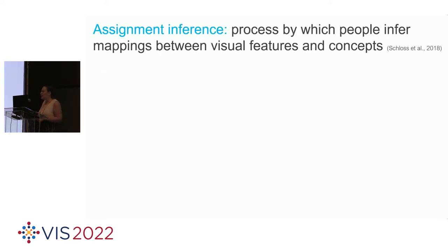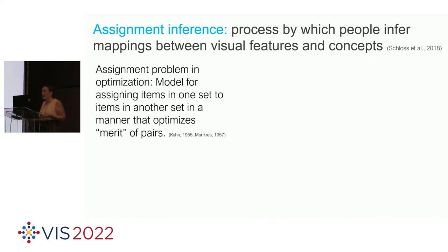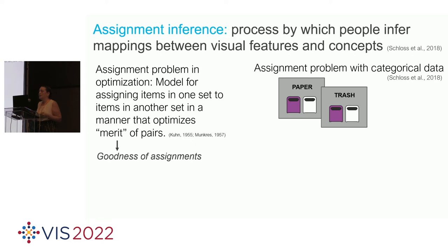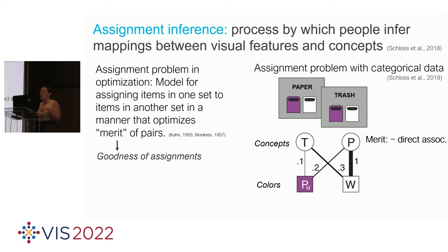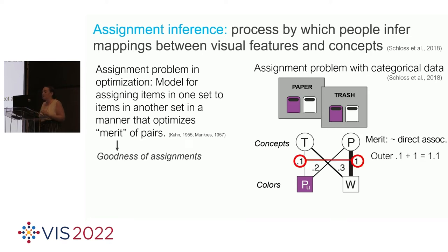These different kinds of visualizations — continuous versus categorical data — have different factors studied separately. In the present work, we demonstrate these factors can be understood under a single framework of assignment inference: the process by which people infer mappings among visual features and concepts in encoding systems. It's similar to an assignment problem in optimization — assigning items in one set to items in another to maximize the merit of the pairs. To simulate assignment inference, we create a bipartite graph to represent concepts and colors, where edges represent merit as direct associations. In one trial, trash is more associated with white than purple, but the optimal mapping puts trash in purple.